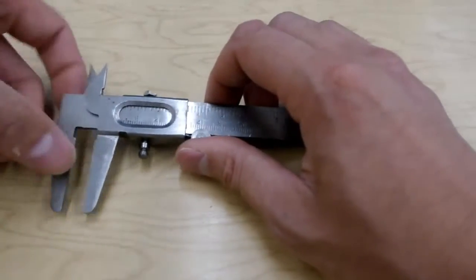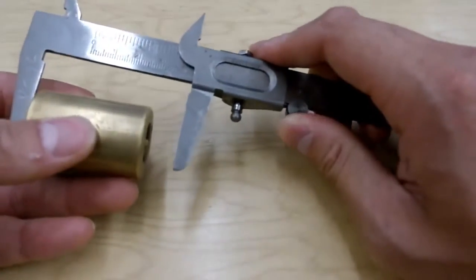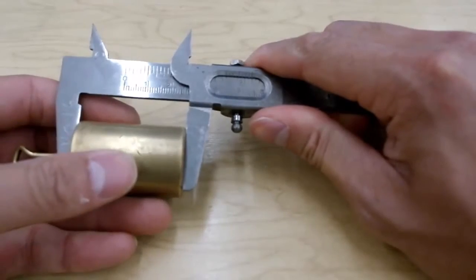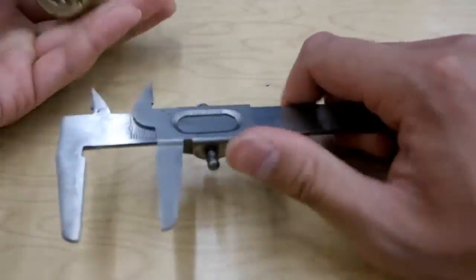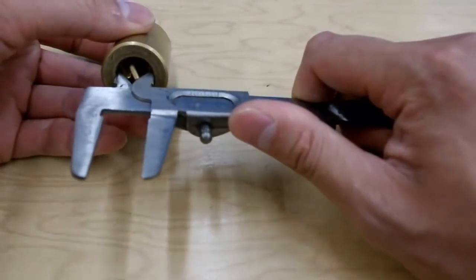Very quickly, this thing down here allows us to measure regular lengths or outer diameter, outer length of different objects. This part up here, that allows us to measure the size of gaps and holes.